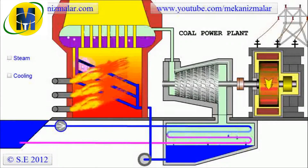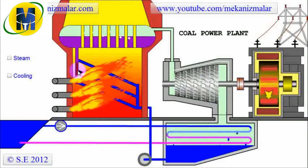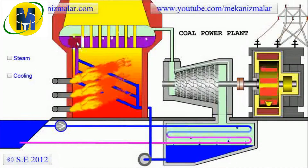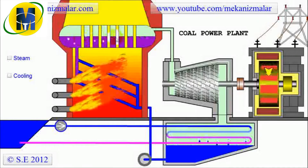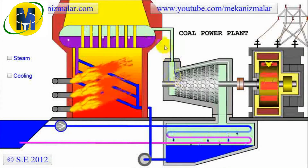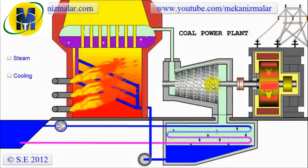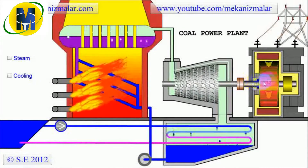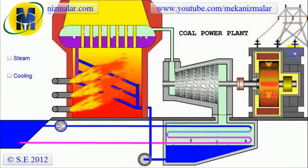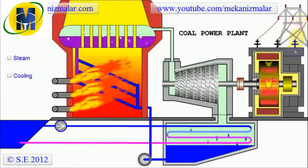This heat passes to the water inside the coils located in the furnace. The hot water is then forced to move to the boiler where it evaporates and generates high pressure steam. The high pressure steam is taken to the steam turbine, and the energy inside the steam is converted to mechanical energy. This mechanical energy is then transferred to the generator where it will be converted to electricity.